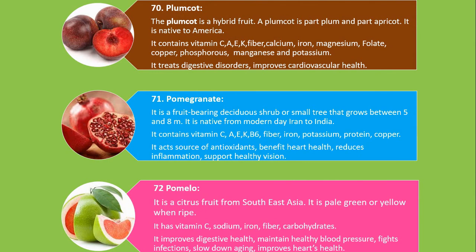Number 70. Plumcot. The plumcot is a hybrid fruit. A plumcot is part plum and part apricot. It is native to America. It contains vitamin C, A, E, K, fiber, calcium, iron, magnesium, folate, copper, phosphorus, manganese and potassium. It treats digestive disorders and improves cardiovascular health.